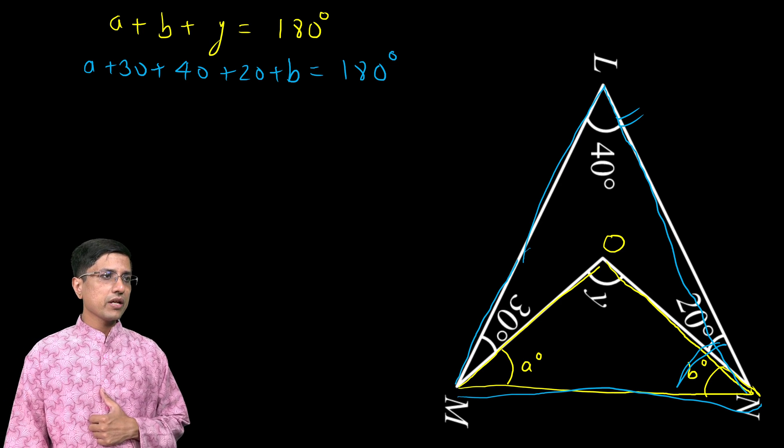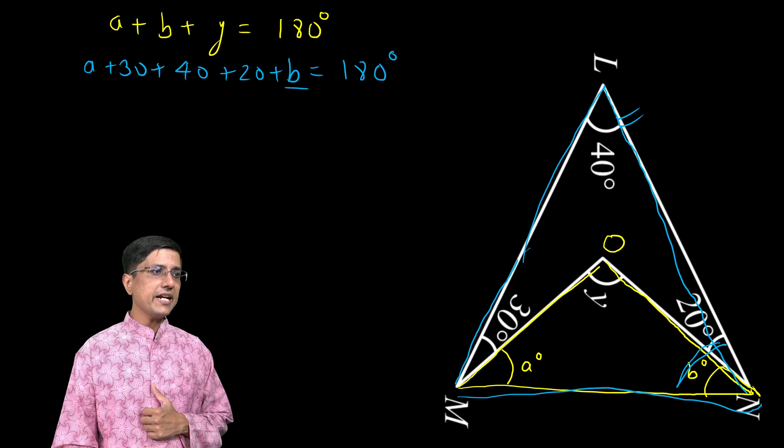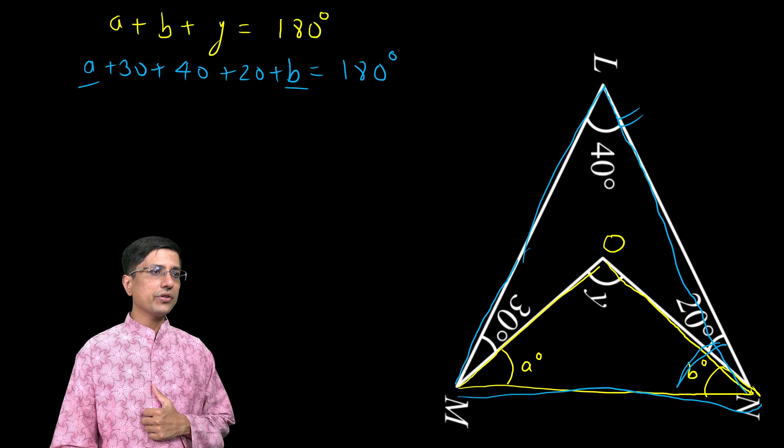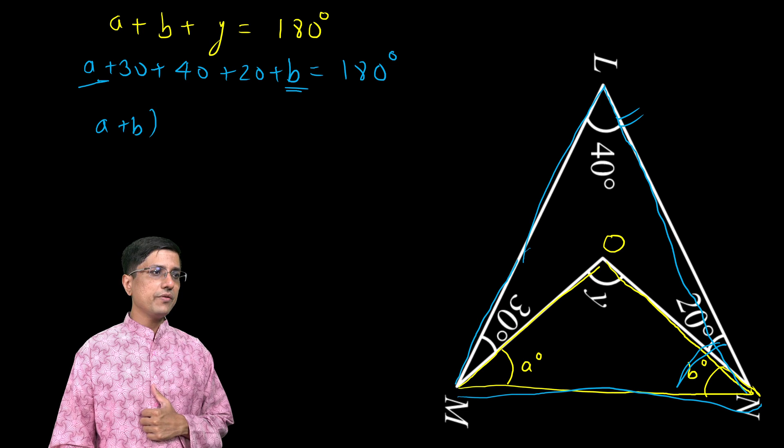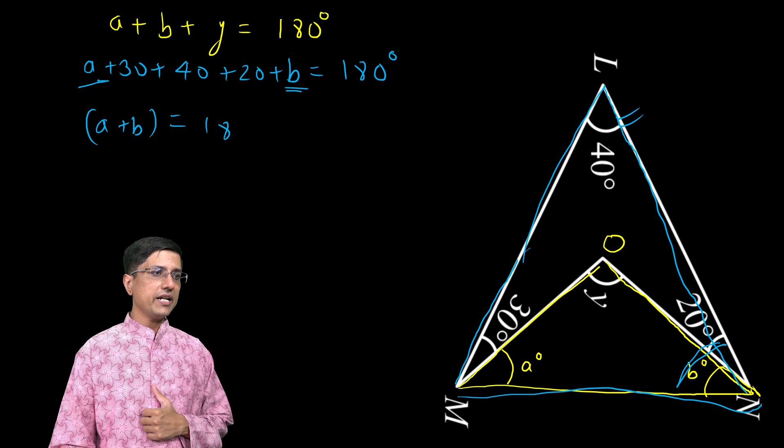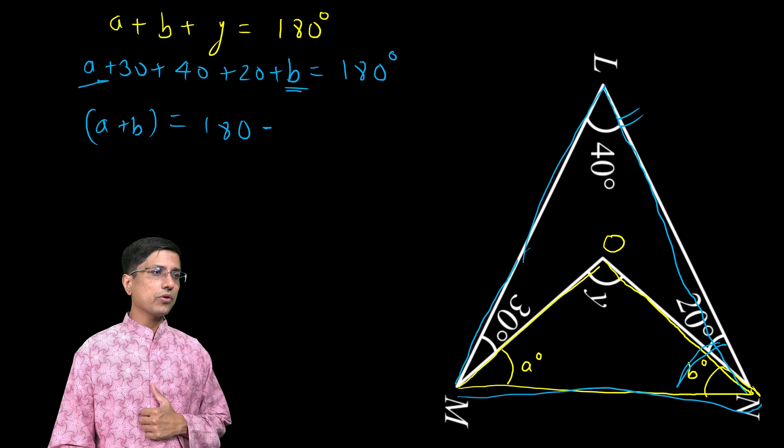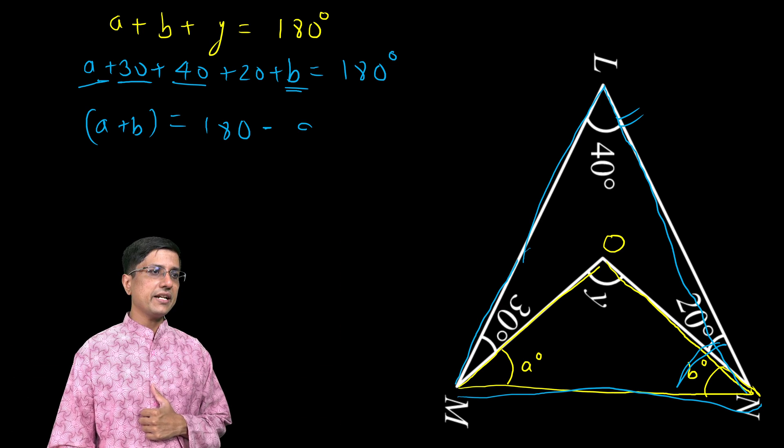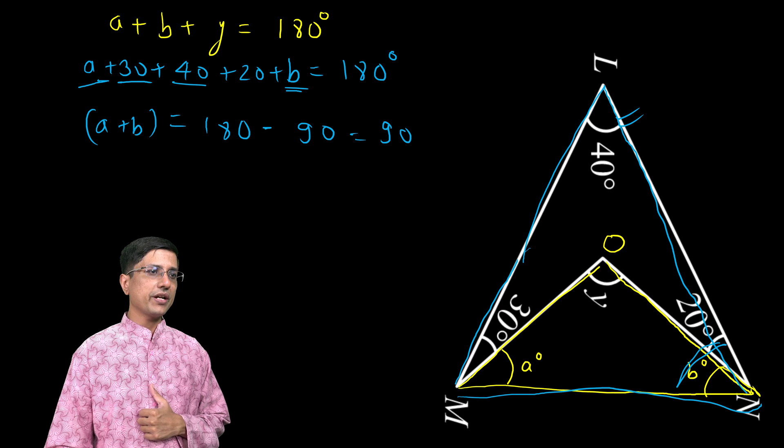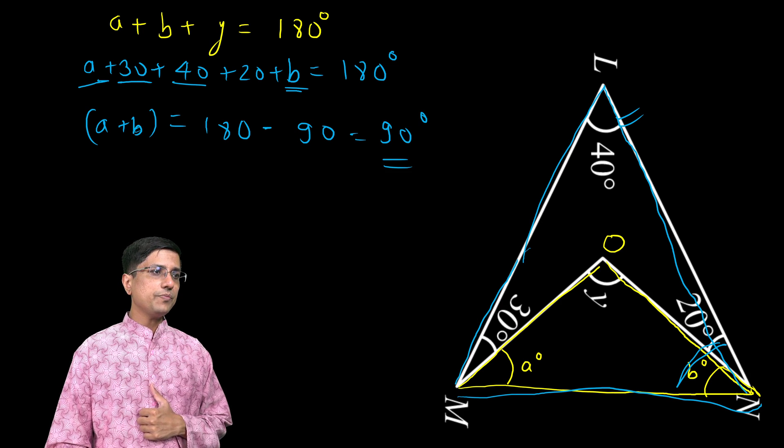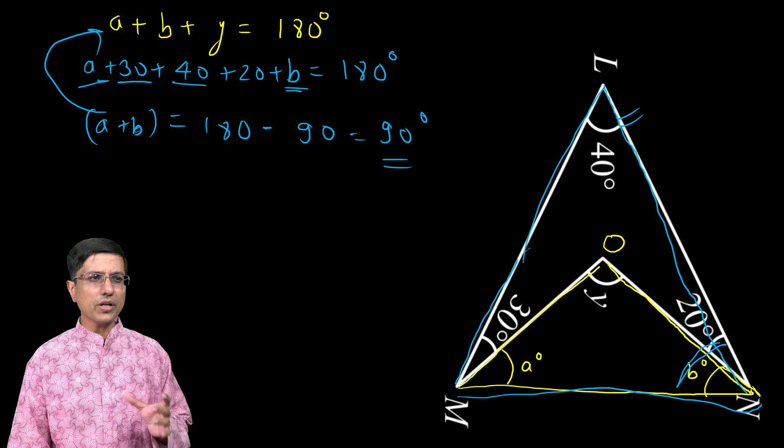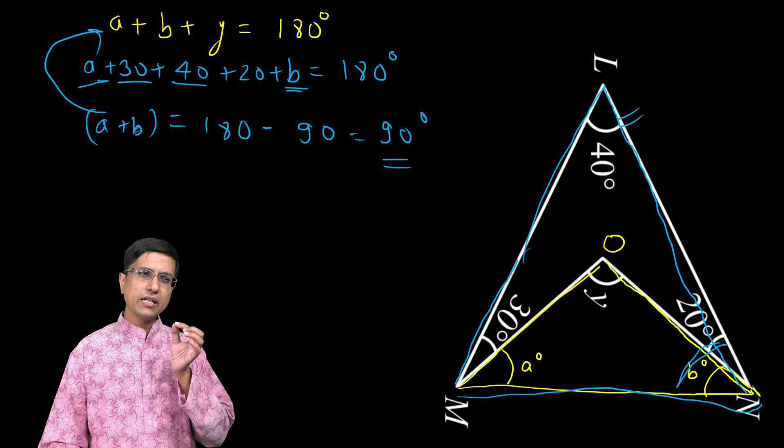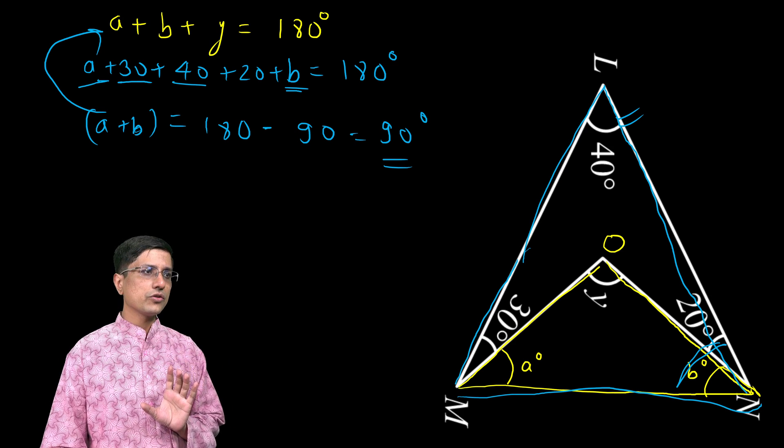Now what I do is, in this second one, I find out the value of a and b. What this value of a + b would be? It would be 180 minus the total of this 30 + 40 + 20. This comes out to be 90 degrees. a + b, I substitute in the top problem. Very simple. Systematically, we are approaching it, no difficulty at all. So this a + b, I substitute here.